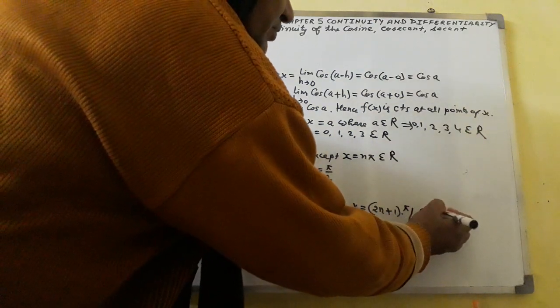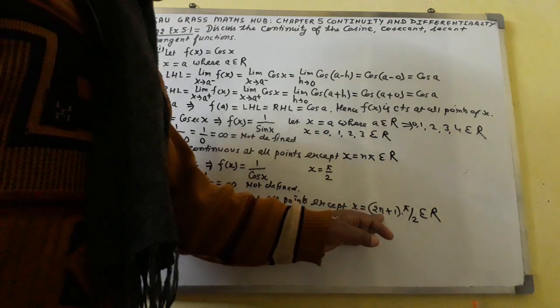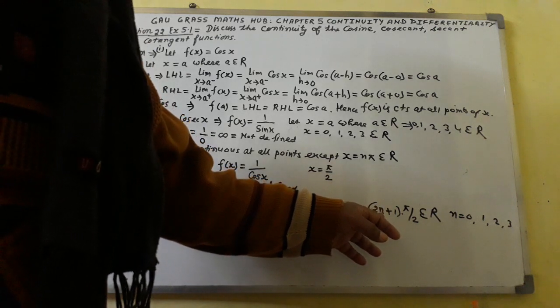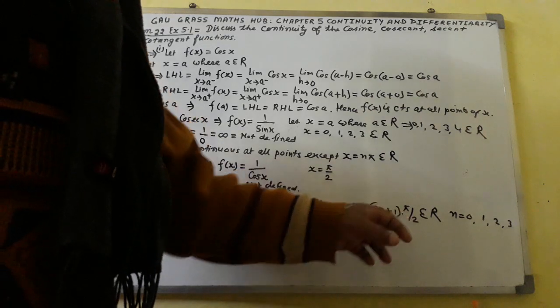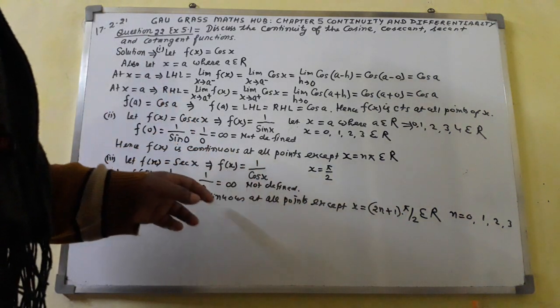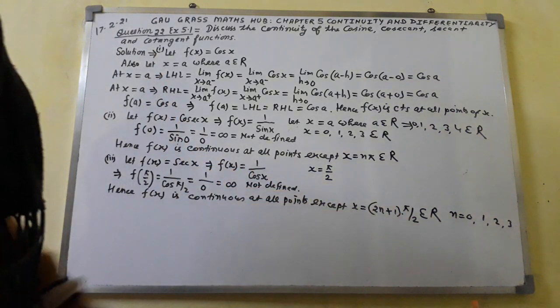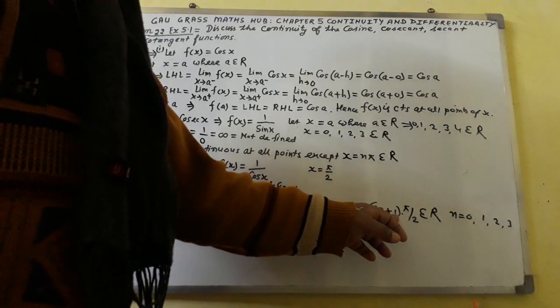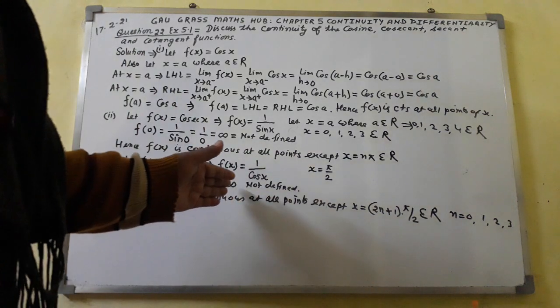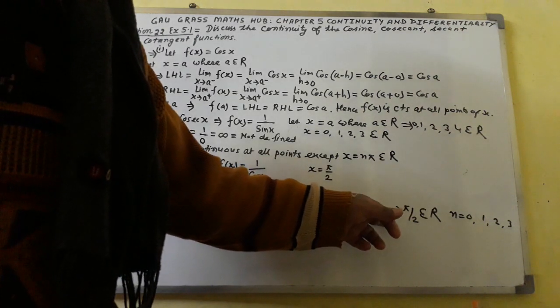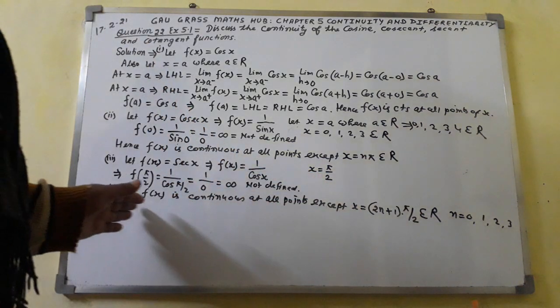So f of x belongs to R. If you put n equal to 0, then 2 times 0 plus 1 gives 1, and x equals π/2 — the function is not defined there. If you put n equal to 1, you get x equal to 3π/2, again not defined. That's why except x equal to (2n + 1) · π/2, f of x is continuous at all points.